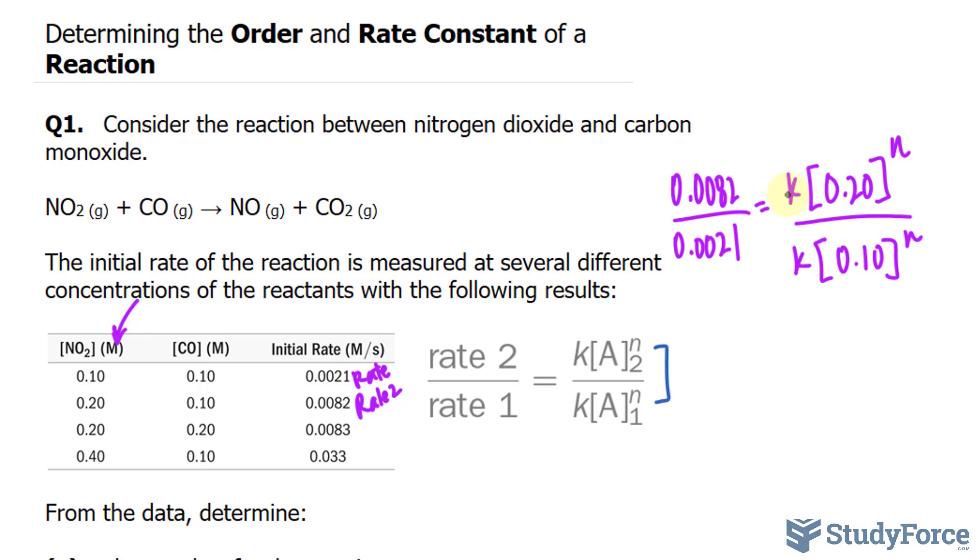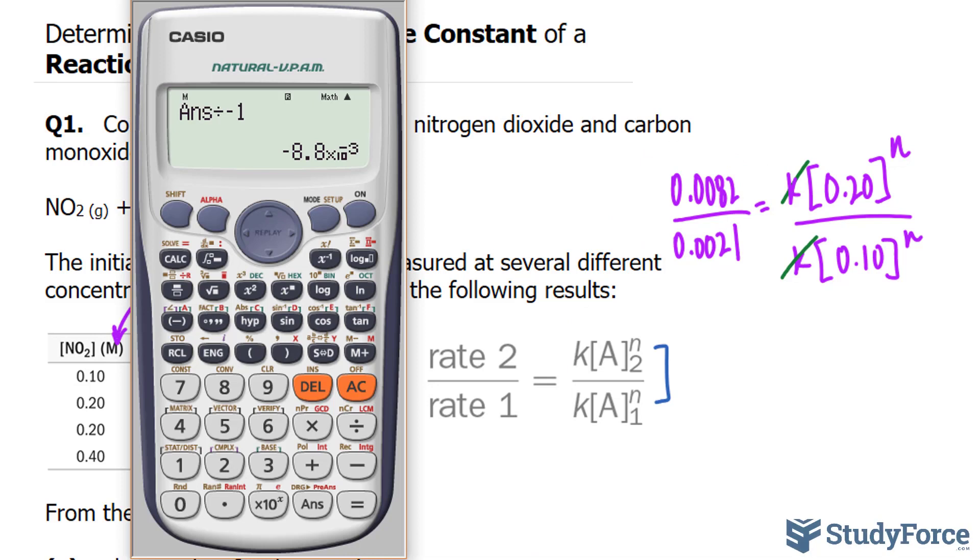Notice that the two k's cancel out. And we can also divide these two numbers using our calculator: 0.0082 divided by 0.0021.